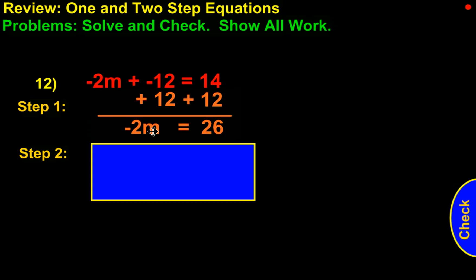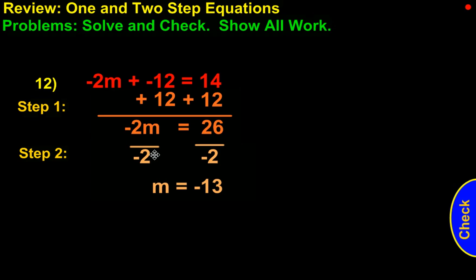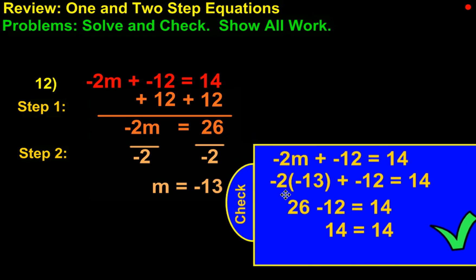Now the negative 2 is being multiplied by m. We divide by negative 2 on both sides. That isolates the m, and over here it gives us negative 13. We substitute for m negative 13 into the equation. Negative 2 and negative 13, two negatives make a positive, which is positive 26. The plus and the minus go to negative, so it's negative 12 equals 14. We have 26 minus 12 equals 14. 14 equals 14, so the check works.